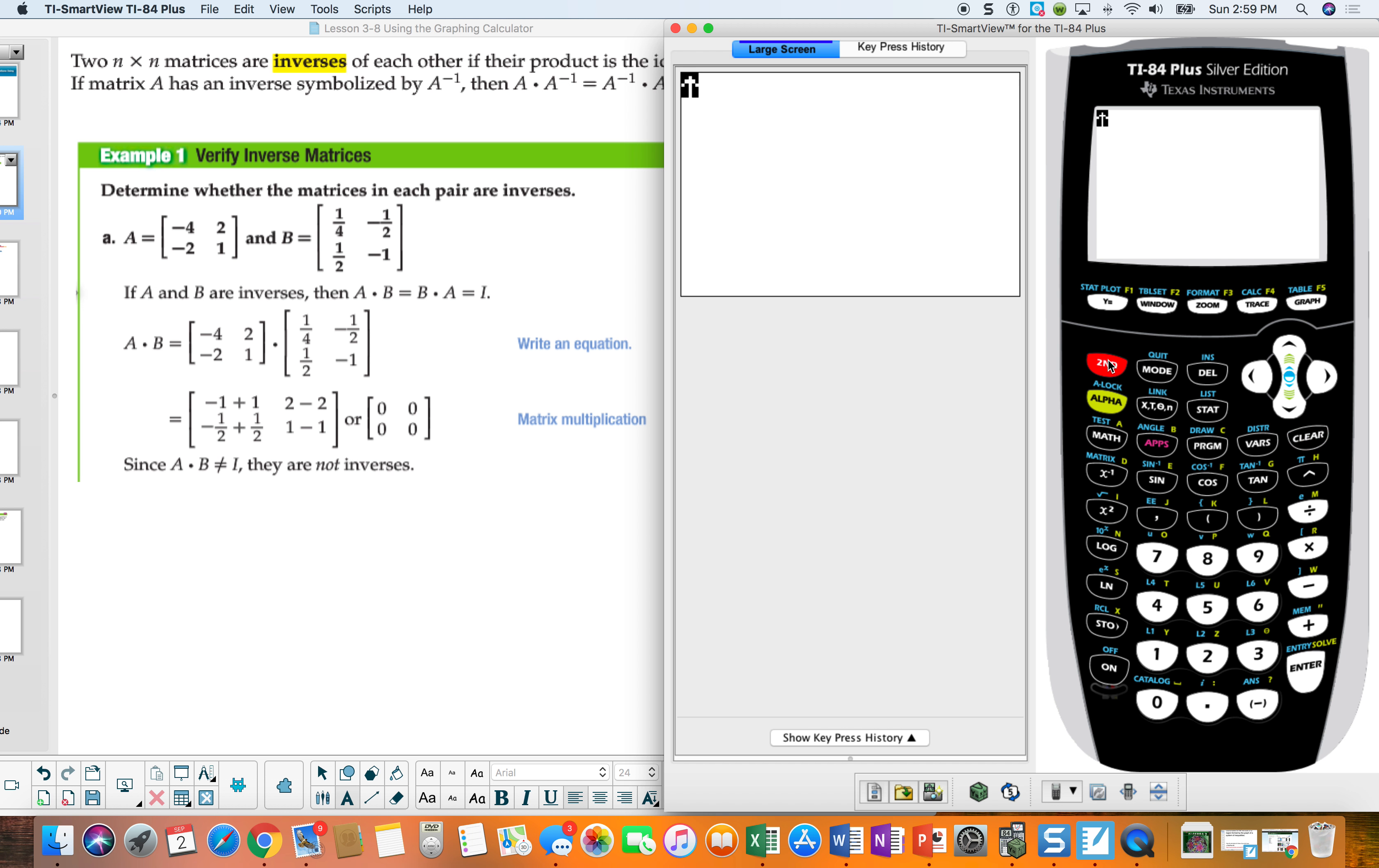Now I've already loaded A, so if I go to second matrix and go to edit and enter, you can see I've already loaded negative 4, 2, negative 2, 1. I'm going to do second matrix and I'm going to go to edit and go down to B. And I'm going to load up these numbers, so 1 divided by 4, enter. It's going to show up as a decimal, negative 1 divided by 2, enter. And I could just write .5 because I know that's .5 and then negative 1.